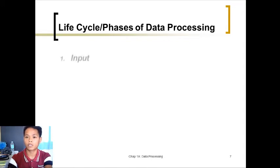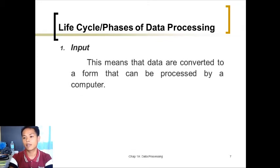Life cycle or phases of data processing: First is Input. Data are converted to a form that can be processed by a computer. For example, when you input letter A, it gets an equivalent electronic code. Then that electronic code is converted by the processor so the computer can understand it. Once understood, it's passed to the monitor so you can see it on the computer.